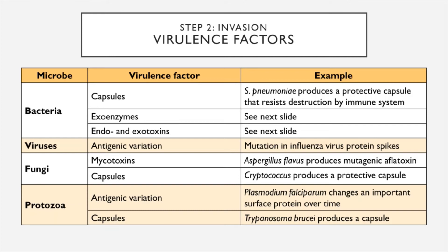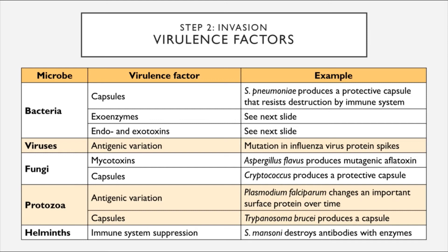Protozoa also exhibit virulence factors, including antigenic variation just like viruses. Plasmodium falciparum, which causes the most virulent form of malaria, changes an important surface protein over time, making it difficult to protect against. They can also produce capsules — Trypanosoma brucei, the cause of African trypanosomiasis (also known as African sleeping sickness), produces a protective capsule similar to bacteria. Helminths exhibit some virulence factors as well; notably, Schistosoma mansoni destroys antibodies that host organisms produce using special enzymes, suppressing the immune response that would normally destroy the parasite.